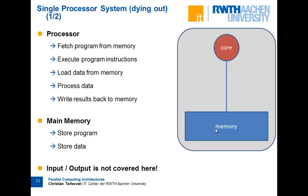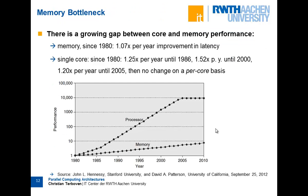What is the problem with this architecture? As it turns out, the cores can process data much faster than they can actually load data from memory and write it back afterwards. So that's a bottleneck — sometimes called the von Neumann bottleneck. The processor can access the memory, but the memory access is far slower than computation.